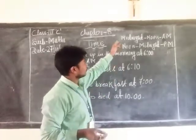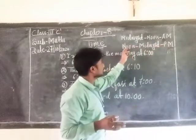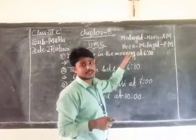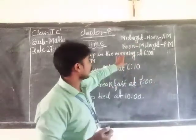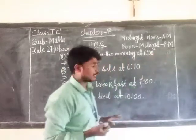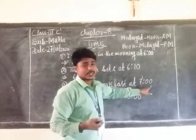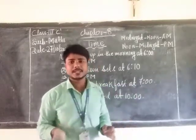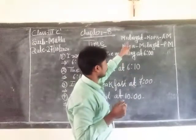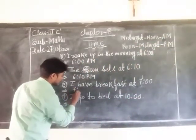Hope you all have understood. The two things to keep in mind: from midnight to noon we are using AM, and from noon to midnight we are using PM. Midnight means 12 o'clock in the night, and noon means 12 o'clock in the day. Next question: I have breakfast at 7. We take breakfast in the morning, which is from midnight to noon, so we use AM. The answer is 7 AM.